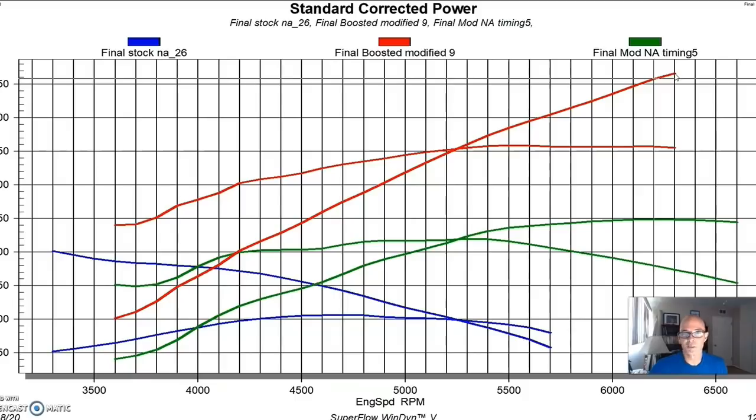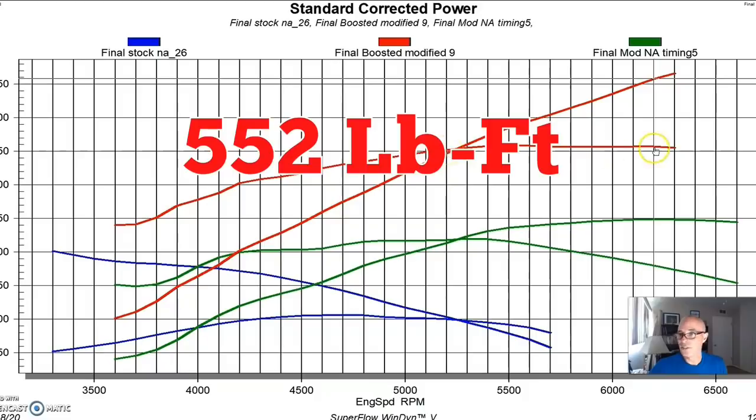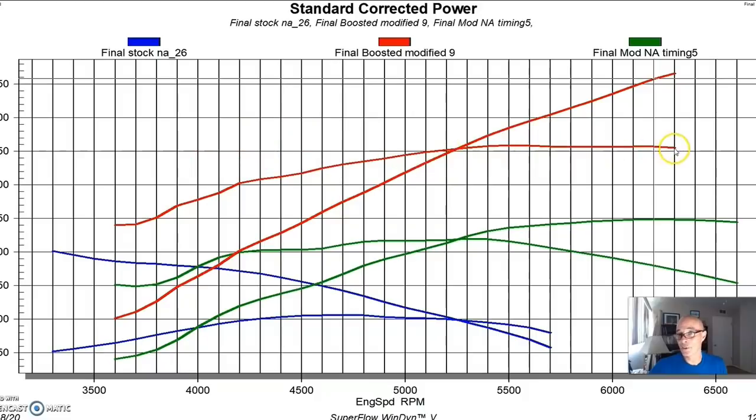But this thing was on a mission and the supercharger would certainly support about another 100 horsepower or more. So it had plenty of capacity left. We had a nice flat torque curve above 550 foot-pounds from 5200 all the way out to 6300. So that was nice and flat. Good things were happening.